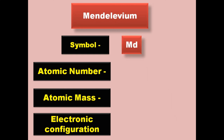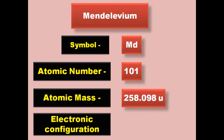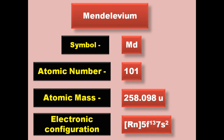Mendelevium has symbol Md, atomic number 101, atomic mass 258.098, electronic configuration [Rn] 5f13 7s2. Mendelevium is an actinide and exists in solid form at room temperature.